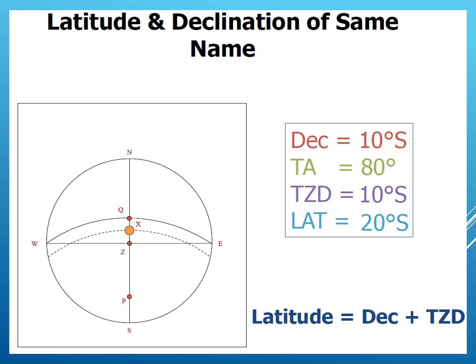Each point on the rational horizon is 90 degrees away from the observer's zenith. If ZX is the zenith distance, then the distance of X from each point on the rational horizon becomes the true altitude.